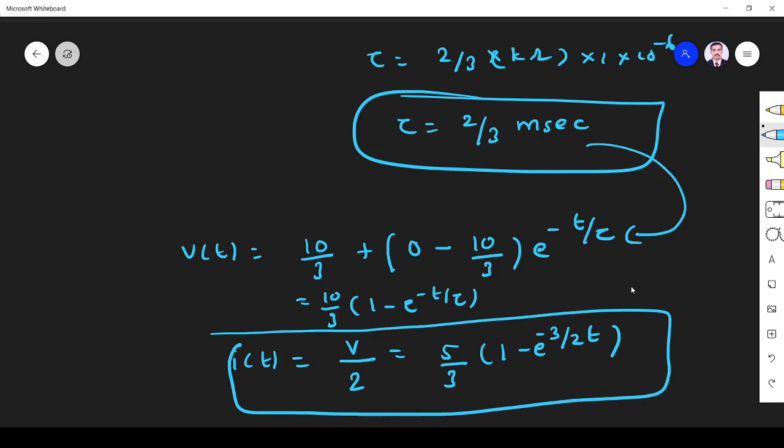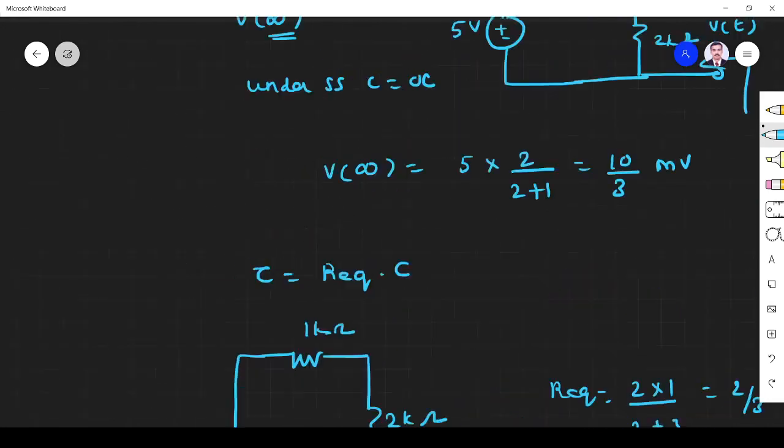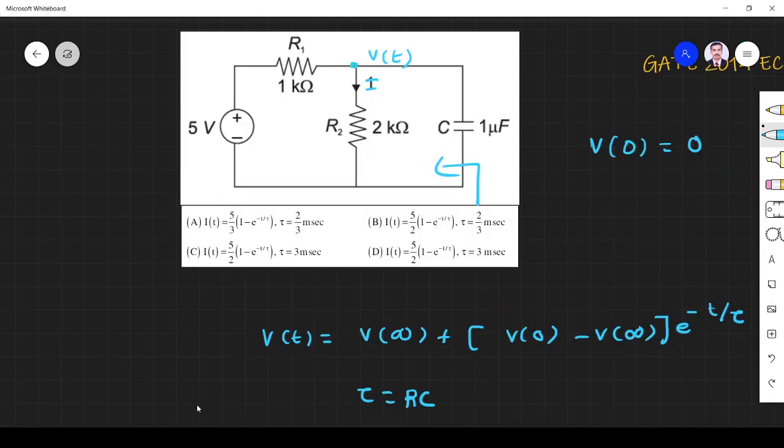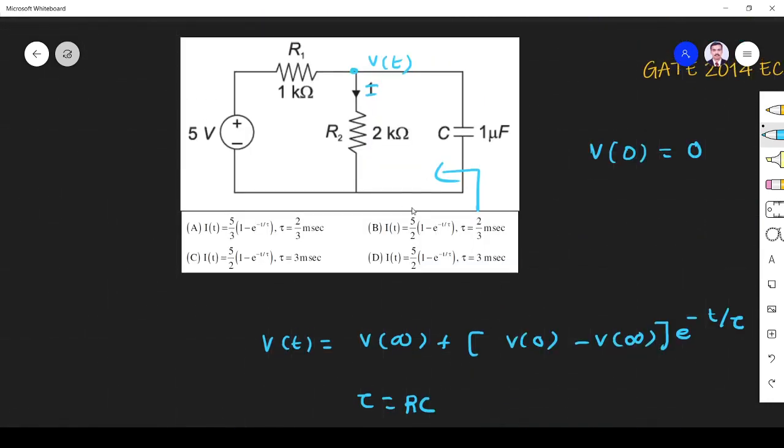This is τ here. Substitute means you will get 5 by 3 into [1 minus e^(-3t/2)]. Let us see where is the answer. 5 by 3 into 1 minus, τ is 2 by 3. τ is 2 by 3 means, these are all wrong answers. So 5 by 3, 1 minus e^(-t/τ). 5 by 3. It is wrong answer. So option A is the right answer. Thank you.